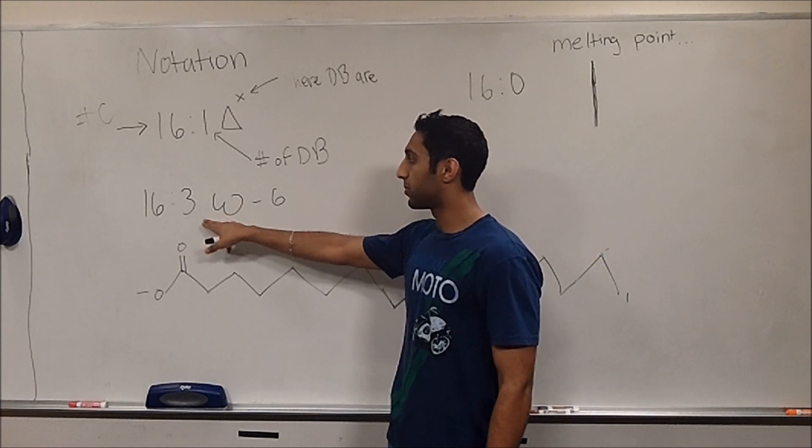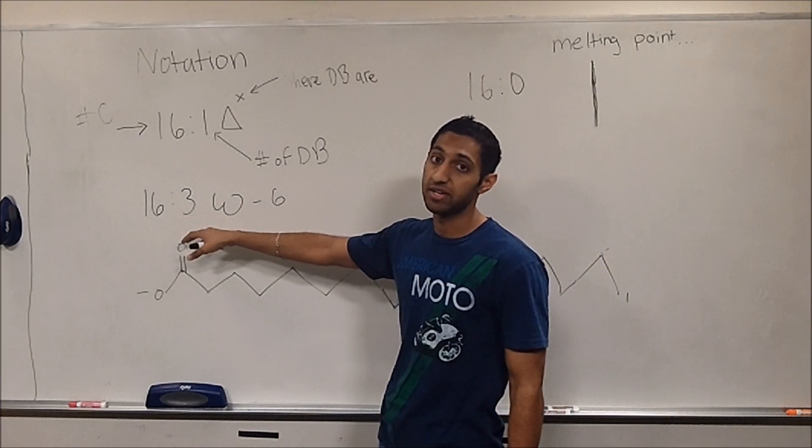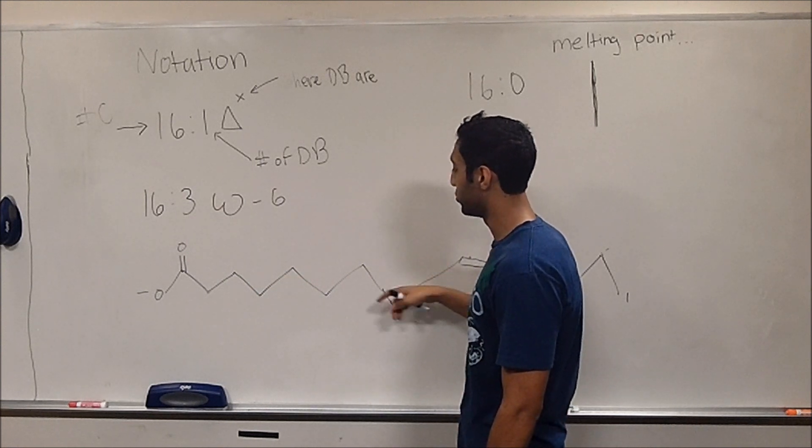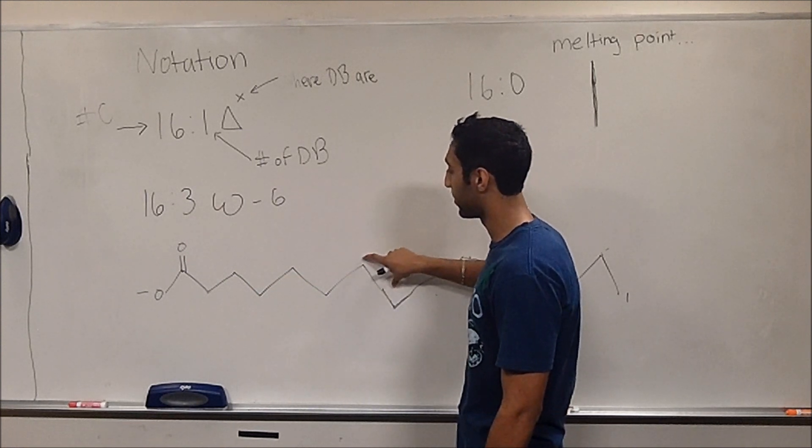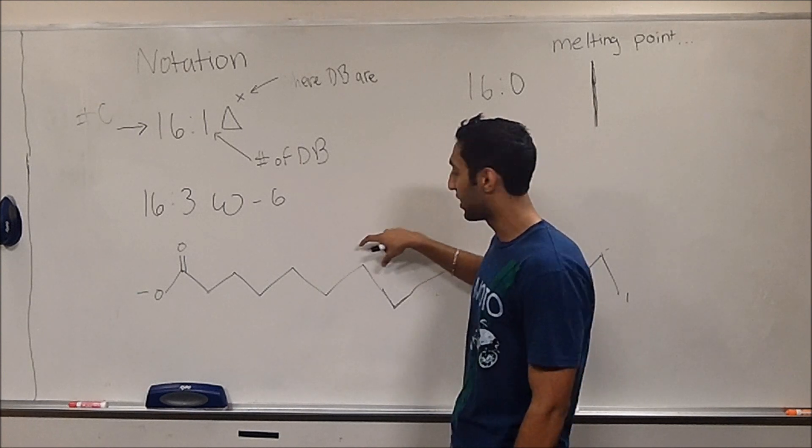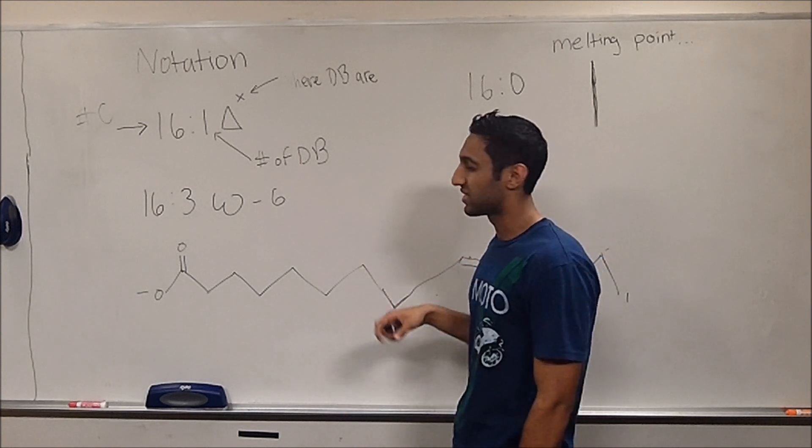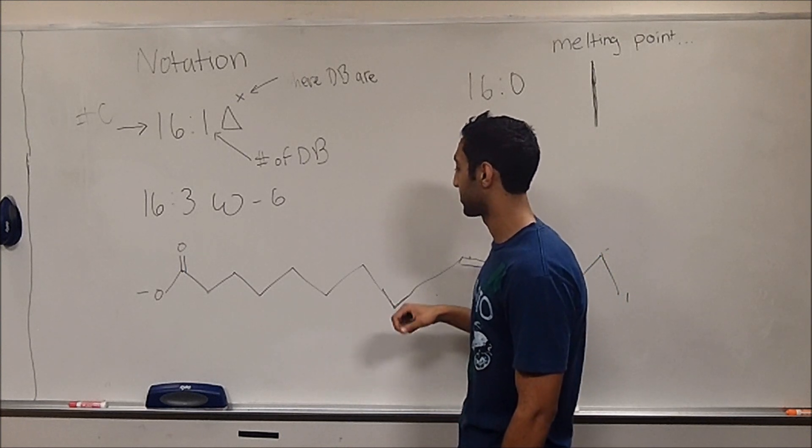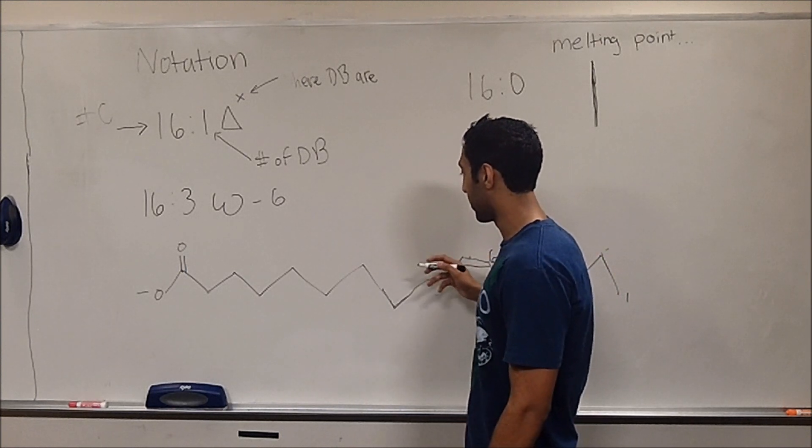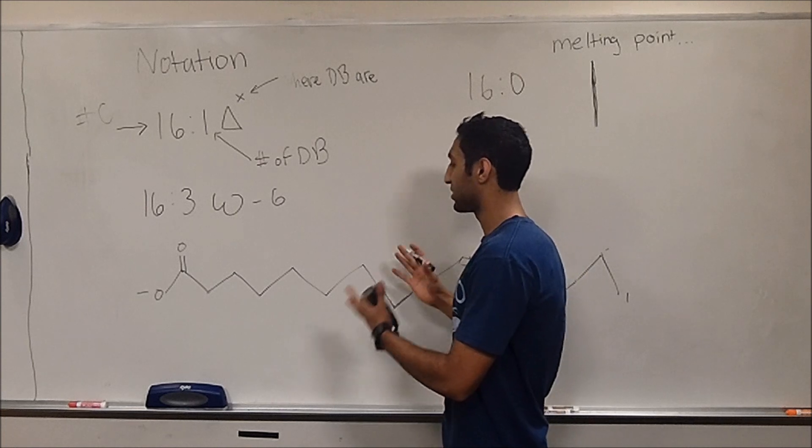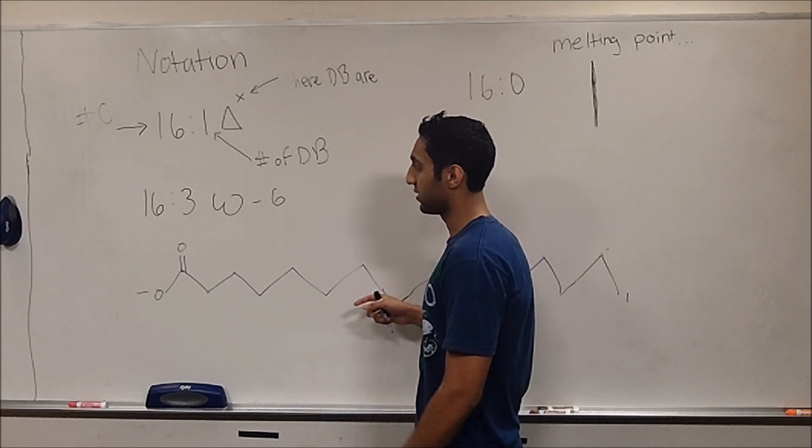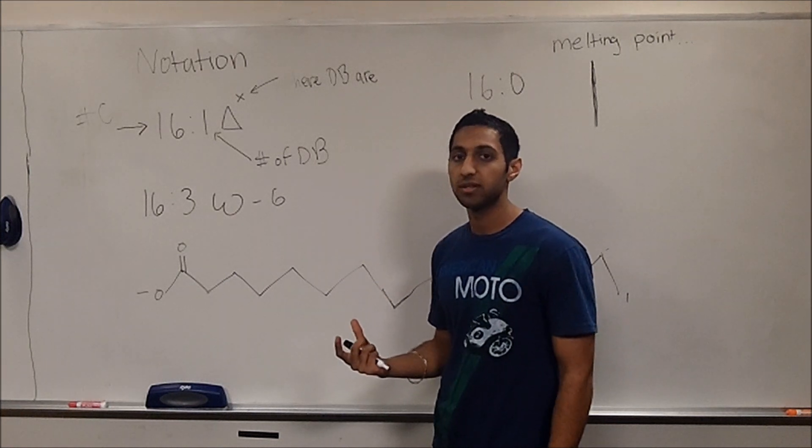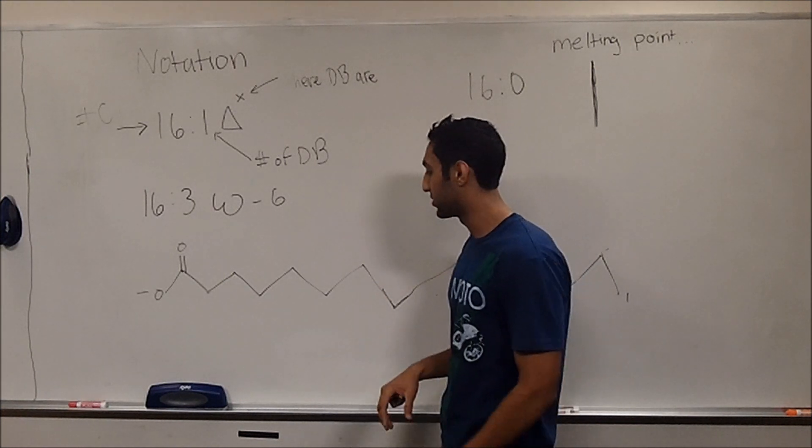Now, where you put the other two double bonds, since this one in particular has three, doesn't quite matter, just as long as you do not put two double bonds successively adjacent to each other. Because it's chemically unstable, and it wouldn't allow for the fatty acid to exist. So whenever you can decide where you choose the double bonds, just as long as there's one carbon space at every point in between the double bonds.